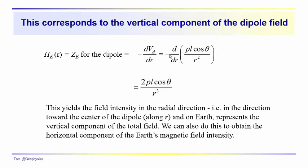If we take that negative derivative, we have negative d/dR of PL times cosine theta over R squared. Going back to calculus, the derivative of R to the minus-two power with respect to R is minus two over R cubed. So the minus signs cancel out, and we get that the radial component of the dipole field equals two times the magnetic dipole moment times cosine of the co-latitude over R cubed.